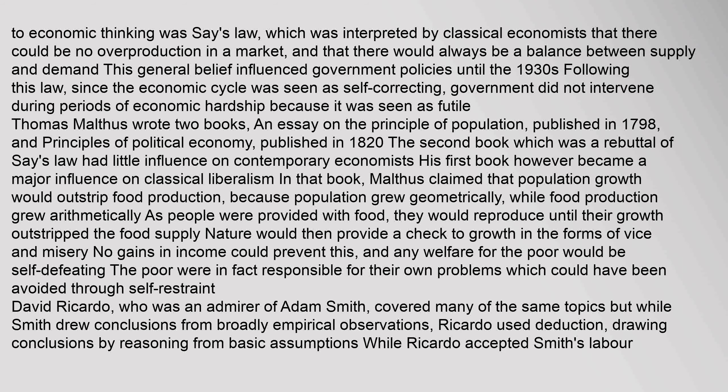Thomas Malthus wrote two books: An Essay on the Principle of Population, published in 1798, and Principles of Political Economy, published in 1820. His first book became a major influence on classical liberalism. Malthus claimed that population growth would outstrip food production, because population grew geometrically while food production grew arithmetically. As people were provided with food, they would reproduce until their growth outstripped the food supply; nature would then provide a check in the forms of vice and misery. No gains in income could prevent this, and any welfare for the poor would be self-defeating — the poor were in fact responsible for their own problems, which could have been avoided through self-restraint.